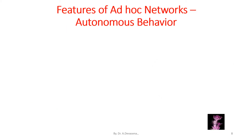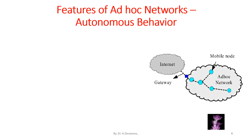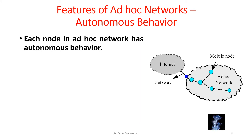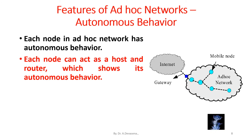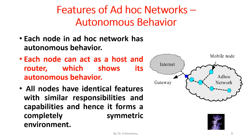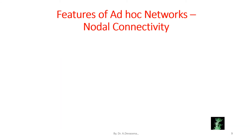Each node in an ad hoc network has autonomous behavior. Each node can act as a host and router, which shows its autonomous behavior. All nodes have identical features with similar responsibilities and capabilities, and hence it forms a completely symmetric environment.